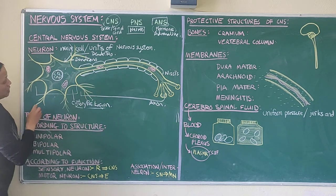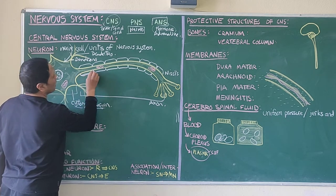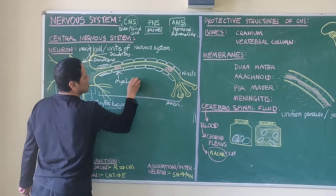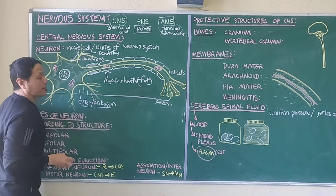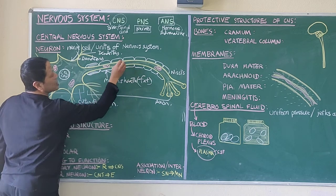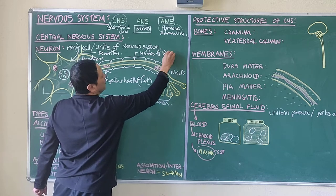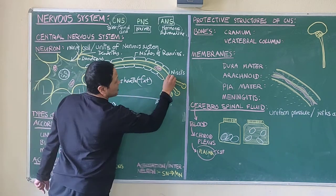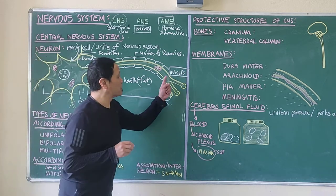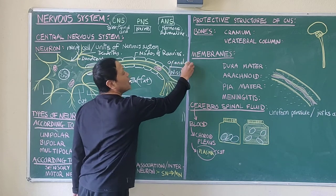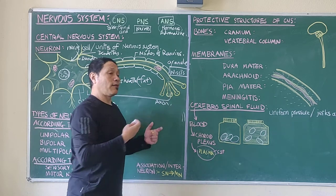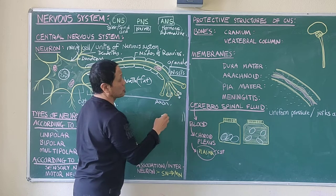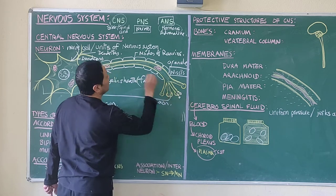That is the work of dendrites and dendrons. And then we have this white cover on the axon. This white part is called the myelin sheath — it is a layer of fat that insulates the axon. It has these tiny gaps known as nodes of Ranvier. And inside the cytoplasm there are special structures known as Nissl's granules, which help in transferring the impulse from one neuron to another.